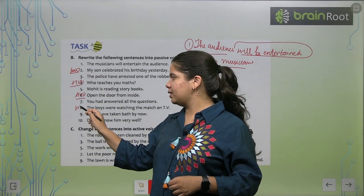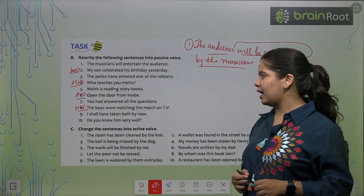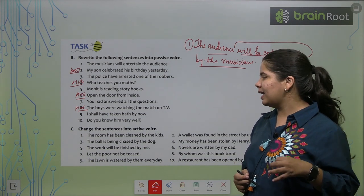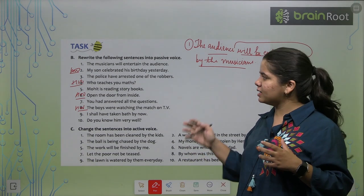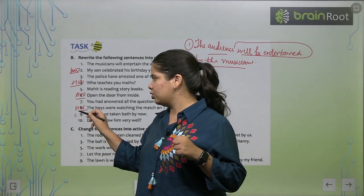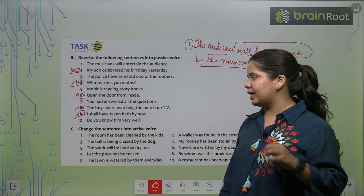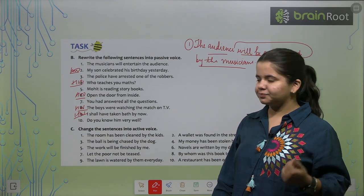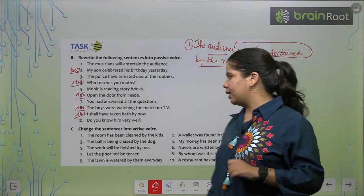Next, the eighth one is again your homework. Ninth one, let's do. I shall have taken a bath by now. Let's read again. I shall have taken bath by now. So can you try this one? It's very easy. It's just like how you have been doing. It's a simple I object one. So this also I want you to once try yourself. Now, tenth one I'll tell you. Do you know him very well? Is he known by you very well? Or you can say, is he known very well by you?